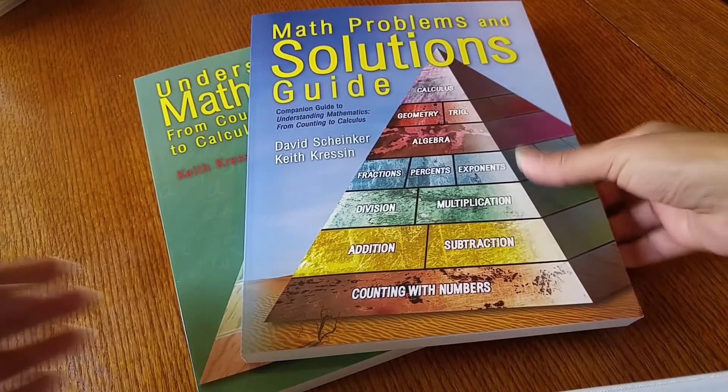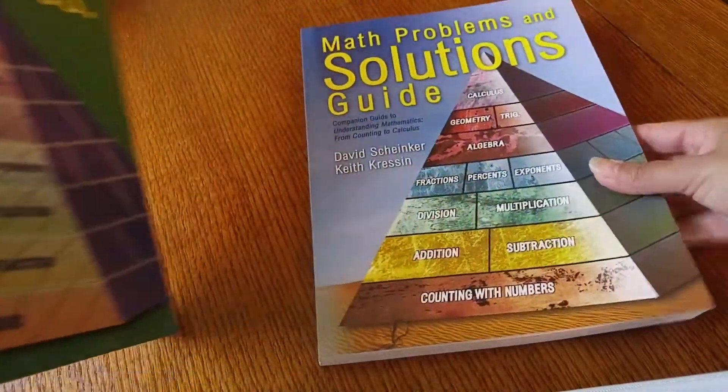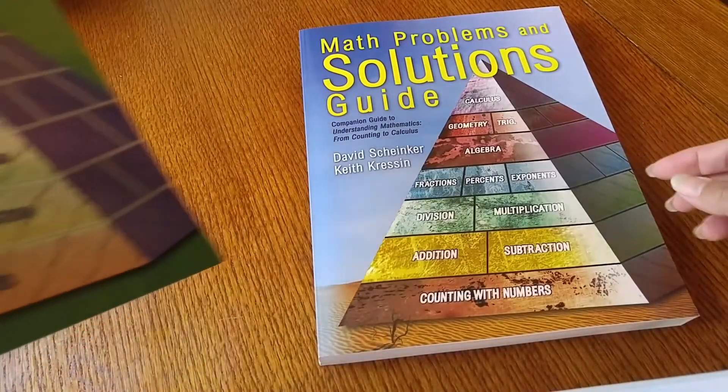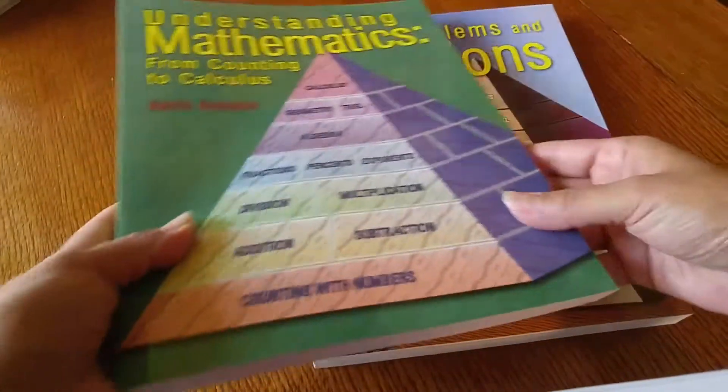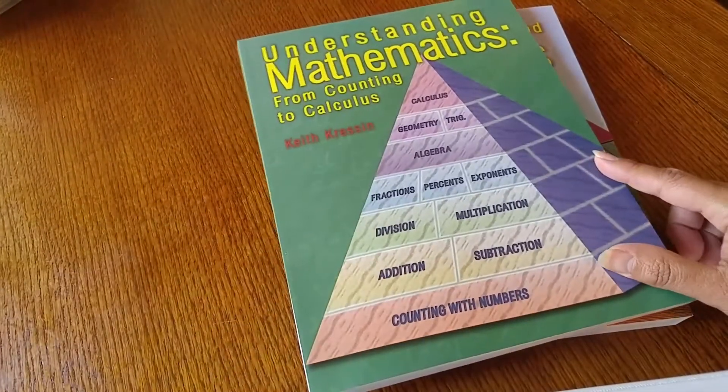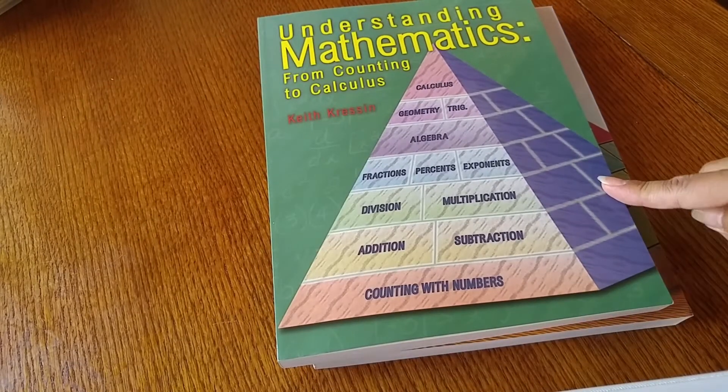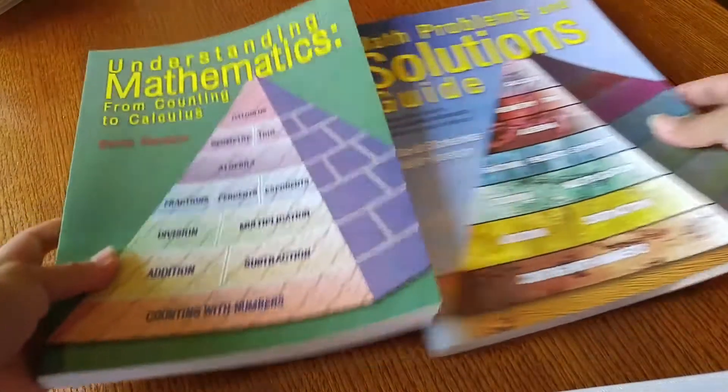So it's Math Problems and Solutions. This is the guide. This is a companion guide to Understanding Mathematics from Counting to Calculus, and this is the Understanding Mathematics from Counting to Calculus. So you'd want to get both.